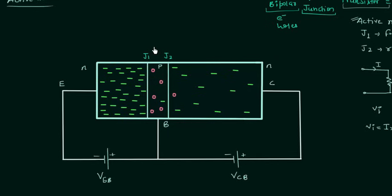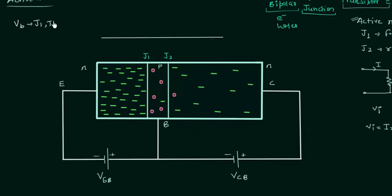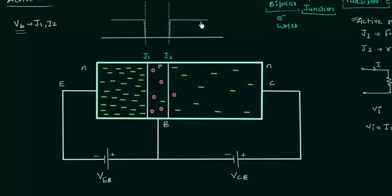Now we have junction J1 forward biased and junction J2 reverse biased. We will analyze the movement of electrons and holes in this three-terminal device. Let's say VB is the barrier potential for both junction J1 and junction J2 when the transistor terminals are open-circuited with no biasing potential. The barrier potential of J2 is equal to VB and the barrier potential of J1 is also equal to VB.